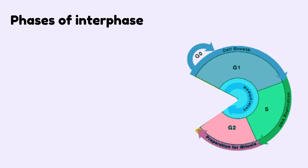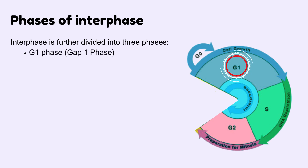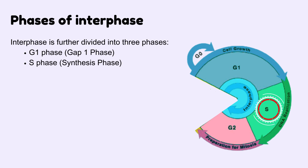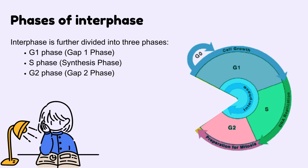Interphase itself is split into three sub-phases: G1 phase, or gap 1 phase; S phase, or synthesis phase; and G2 phase, or gap 2 phase. Let's take a closer look at each of these.